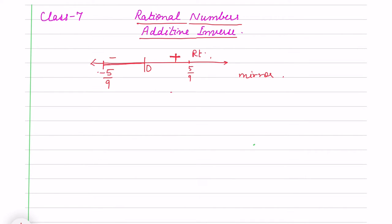If I say additive inverse of 2/3, it will be -2/3. We change the sign of the number.